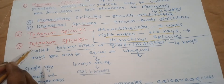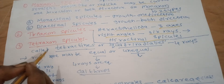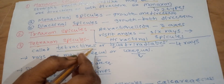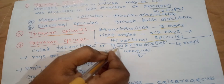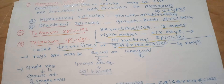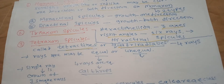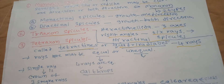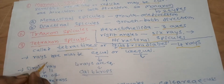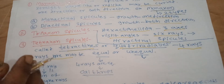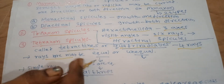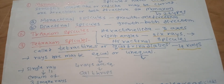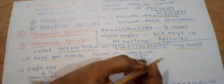Third type: tetraxon spicules, also called tetractins. Tetraxon spicules are quadriradiates, meaning they have four rays radiating in different planes from a common point. These rays may be equal or unequal.